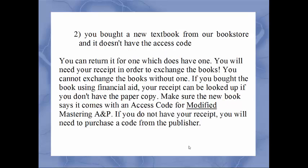If you bought a brand new textbook from the bookstore and it doesn't have the access code, you can return it for one that does, but you must have the receipt to exchange the books. If you bought the book using financial aid, your receipt can be looked up through a database. Make sure when getting the new book it says 'Modified Mastering A&P' — if it doesn't have the word 'modified,' you're getting something different. If you don't have the receipt, you must buy an access code from the publisher directly.